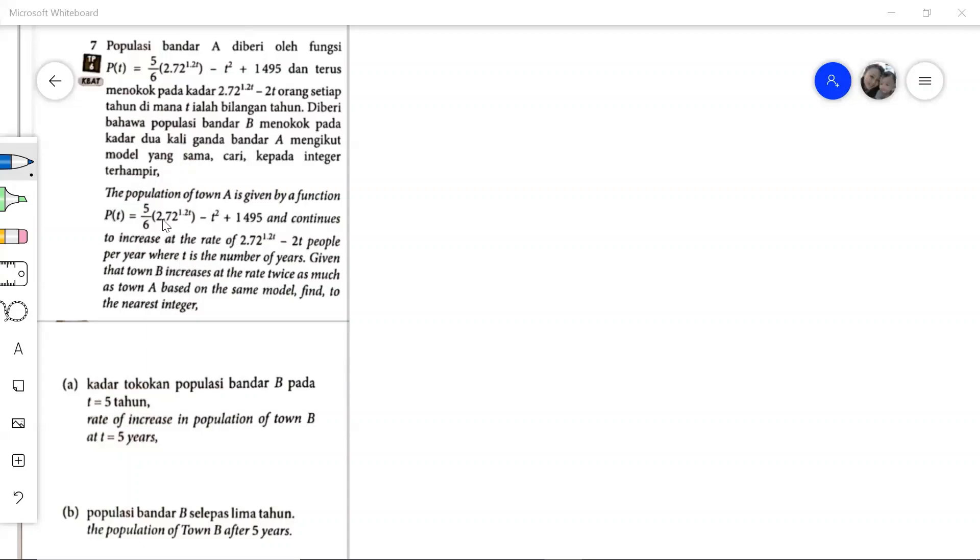So let's write down P(T). The population in terms of T is 5 over 6, 2.72 raised to the power of 1.2T, and then minus T squared plus 1495.